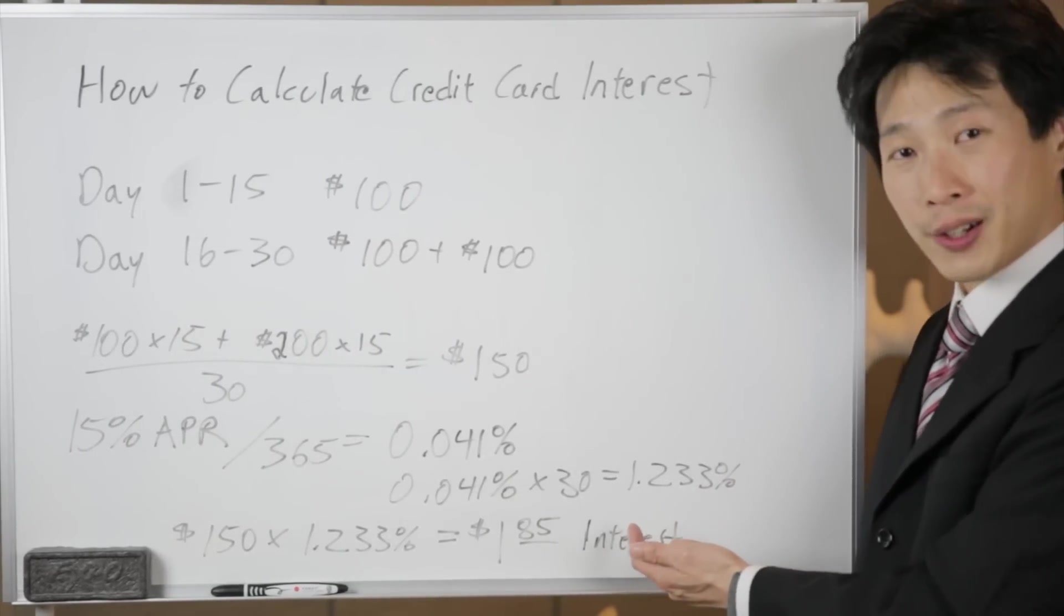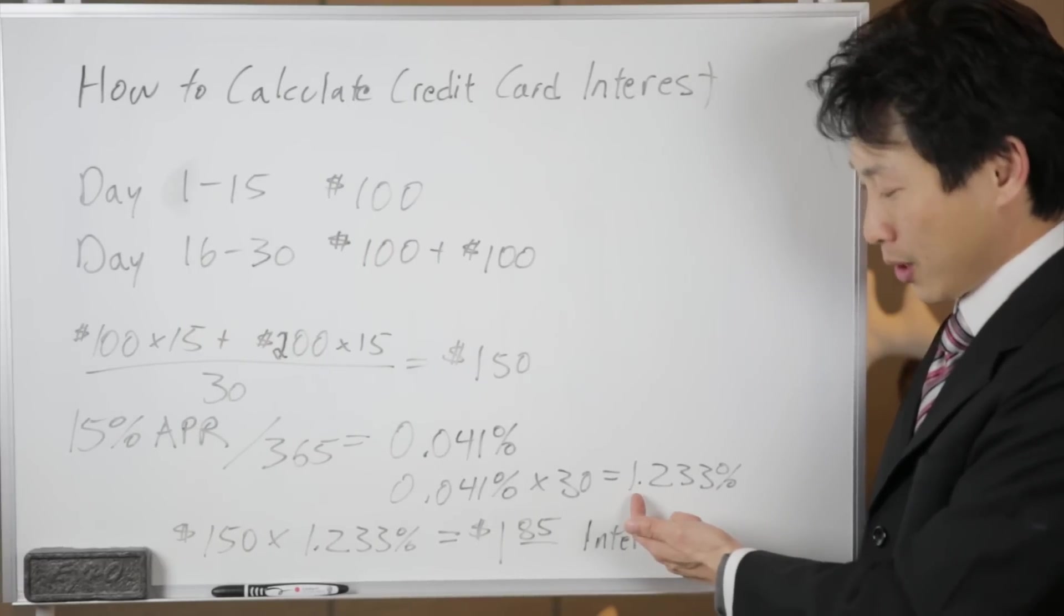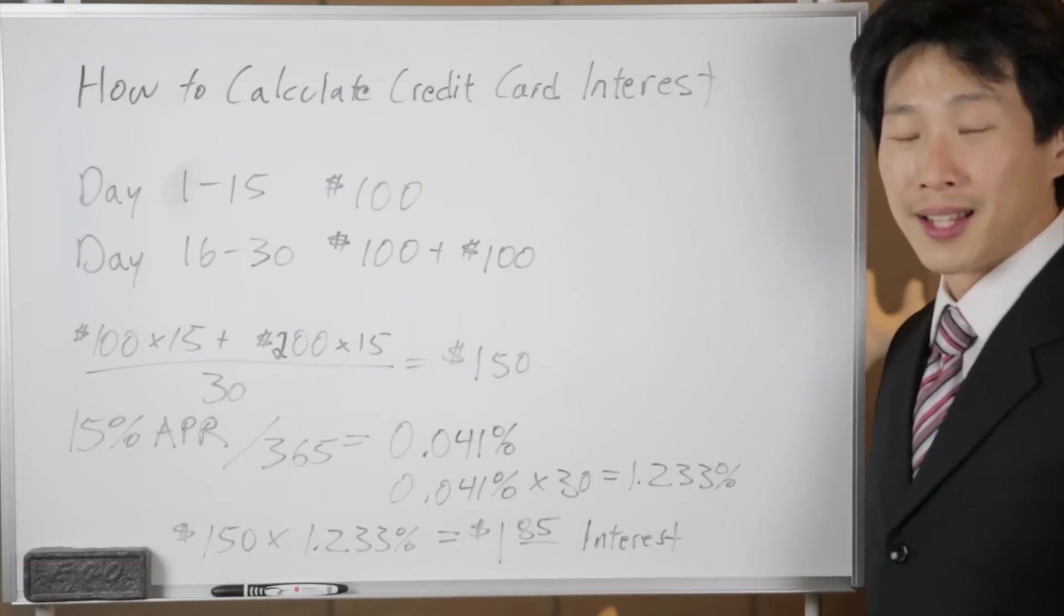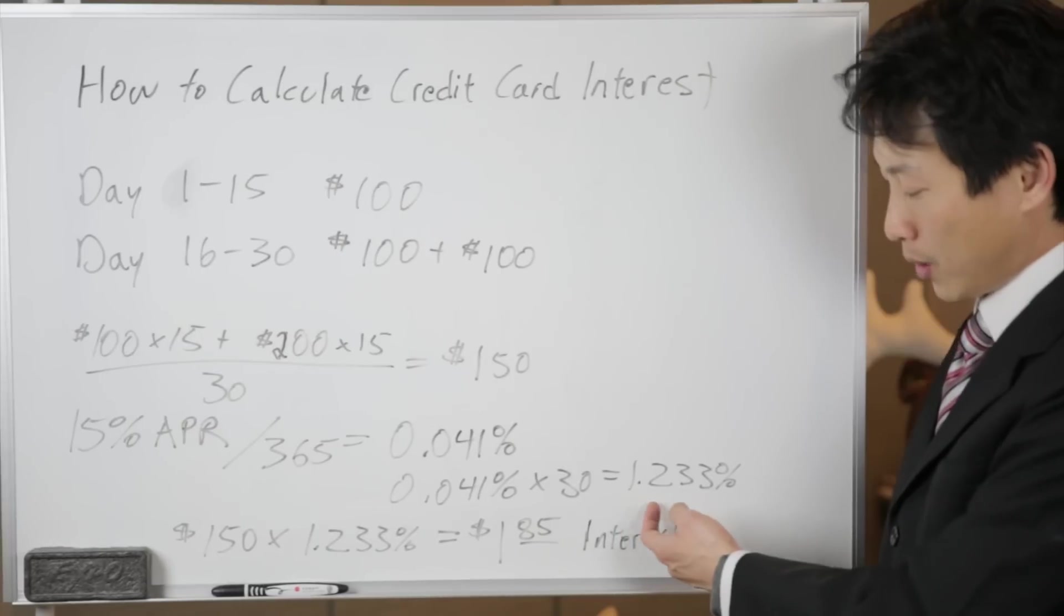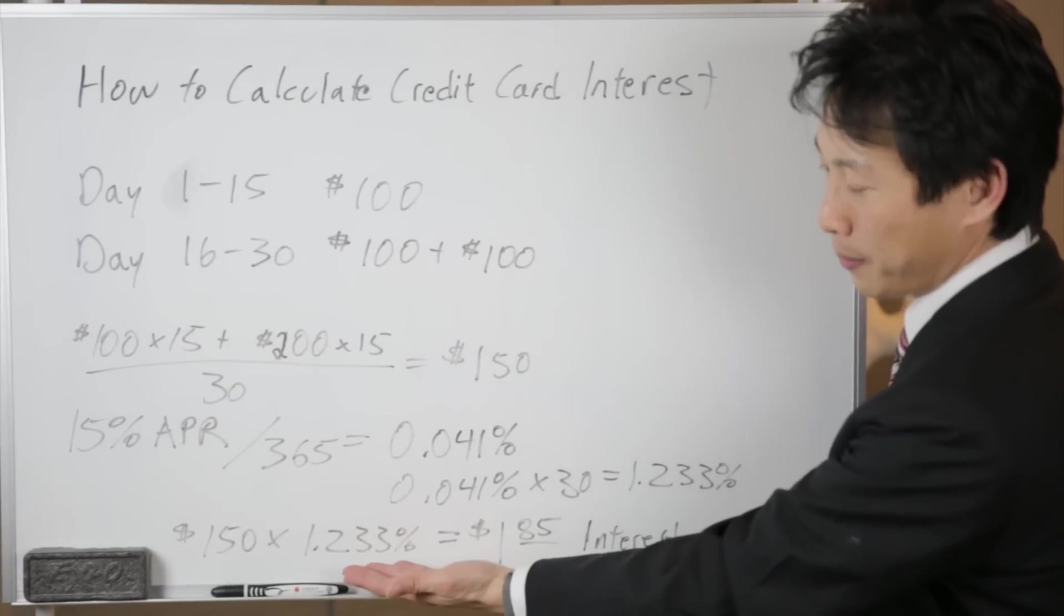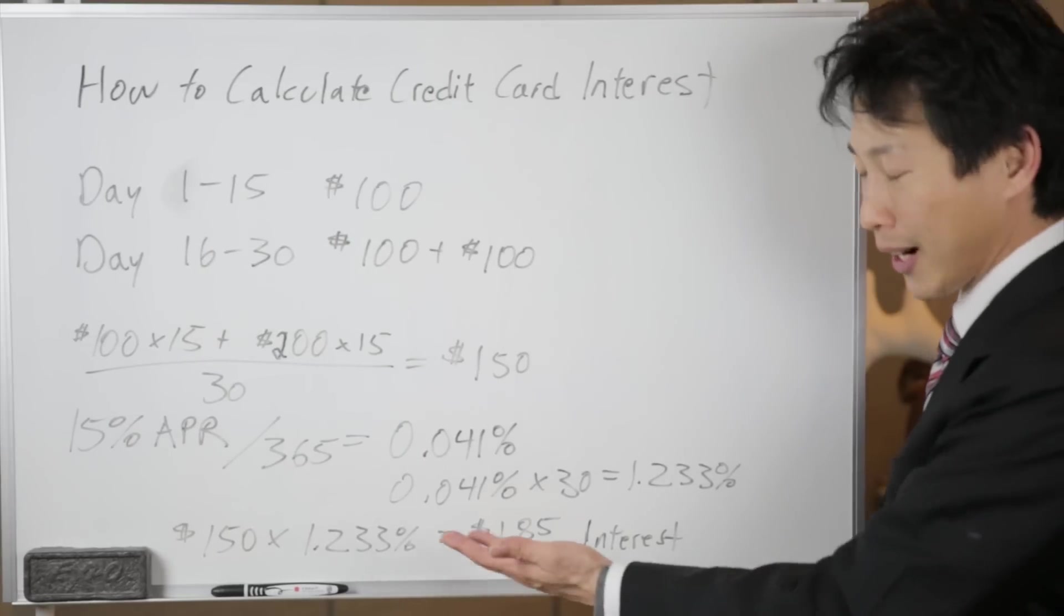So if our average daily balance is $100, we can easily do this math in our head: the interest that you owe will be $1.23. Another example, if your average daily balance is $1,000, it would be $12.33. But in this case it's $150.